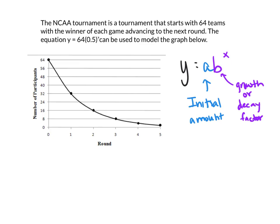So when we look at this graph here, it says the NCAA tournament is a tournament that starts with 64 teams, with the winner of each game advancing to the next round. The equation y equals 64(0.5)^x can be used to model the graph below. And so when we look at this, notice that our y-intercept is starting at 64, or the initial amount. The initial amount should sit on the y-intercept.